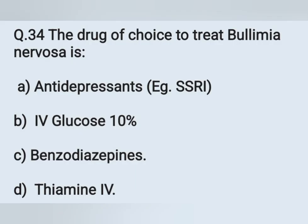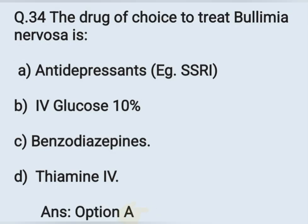Question number 34. The drug of choice to treat bulimia nervosa — Option A: Antidepressants. Option B: IV glucose 10%. Option C: Benzodiazepine. Option D: Thiamine IV. The correct answer is antidepressants — Option A.